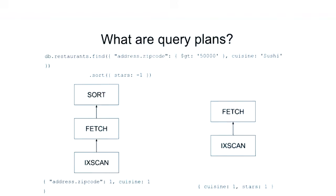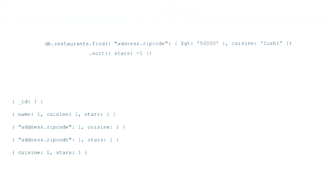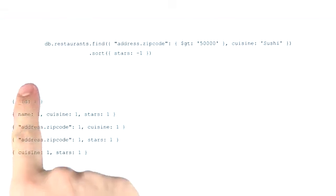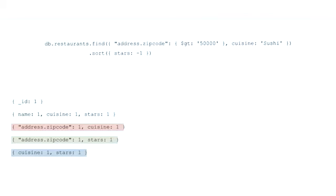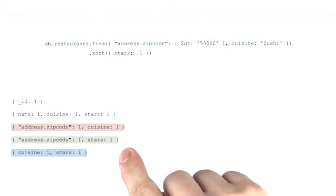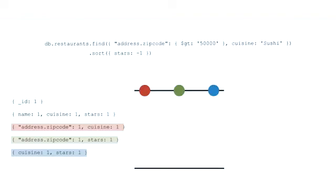Now that we know what a query plan is, let's talk a little bit about how they're chosen. When a fresh query comes in the database for the first time, the server is going to look at all the available indexes on the collection. From there, it will identify which indexes are viable to satisfy the query. We call these candidate indexes. From these candidate indexes, the query optimizer can generate candidate plans.